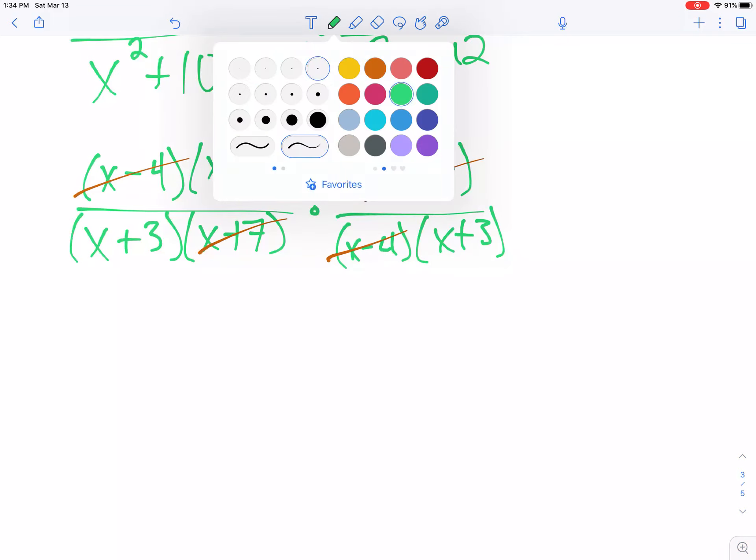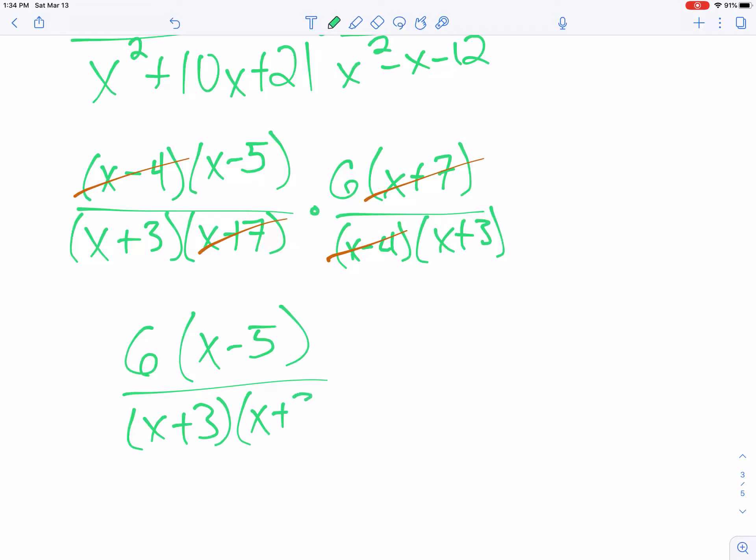So what does that mean? It means my answer is the stuff that's left, 6 times x minus 5 over x plus 3 times x plus 3. And actually can I cheat, can I be lazy, and can I instead write it right at once and just put a squared.